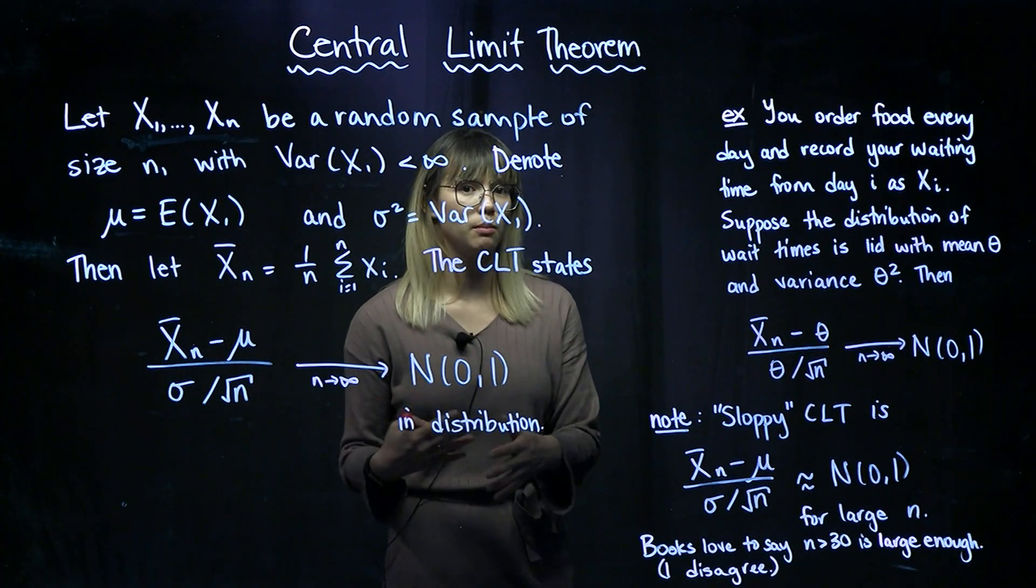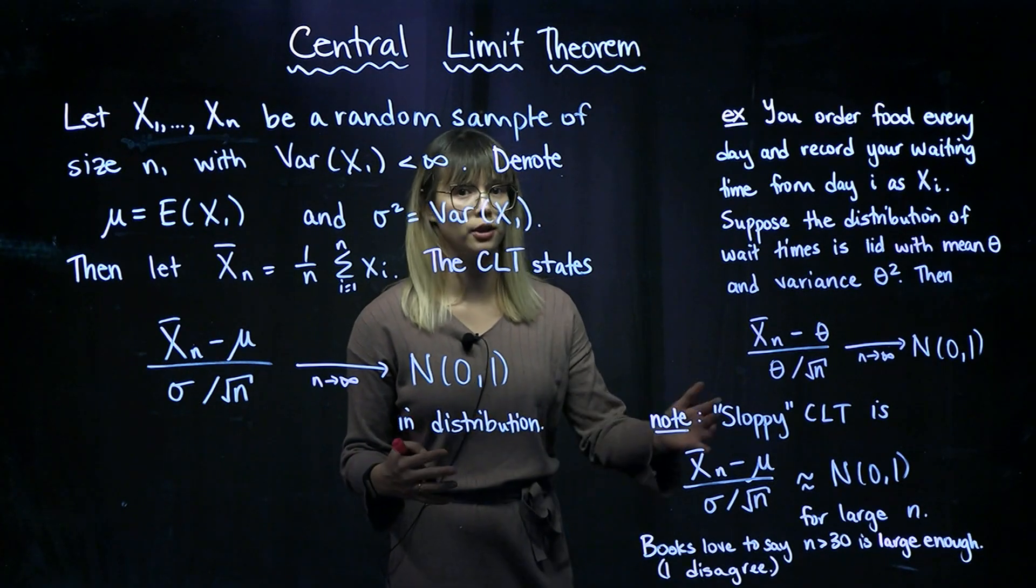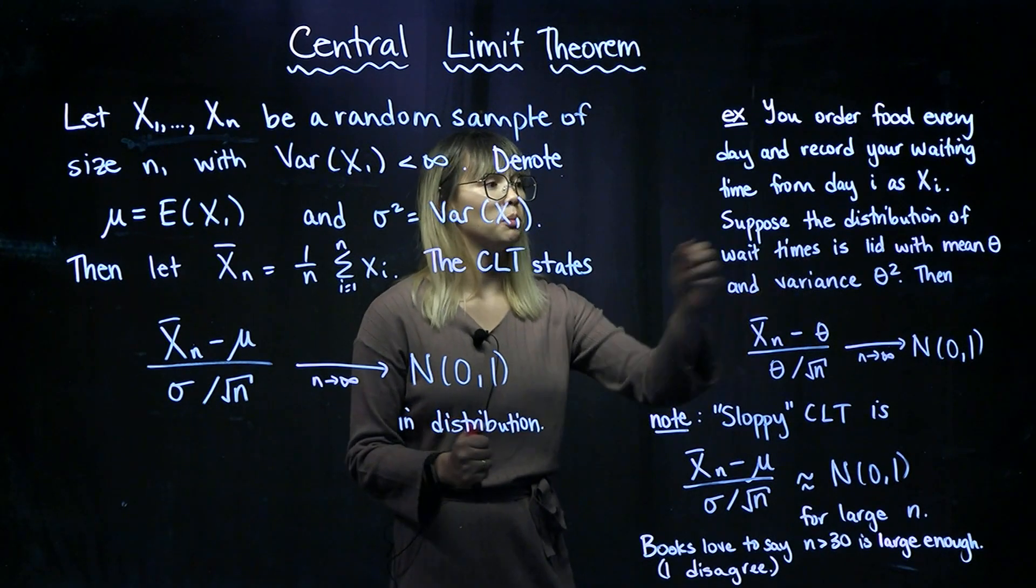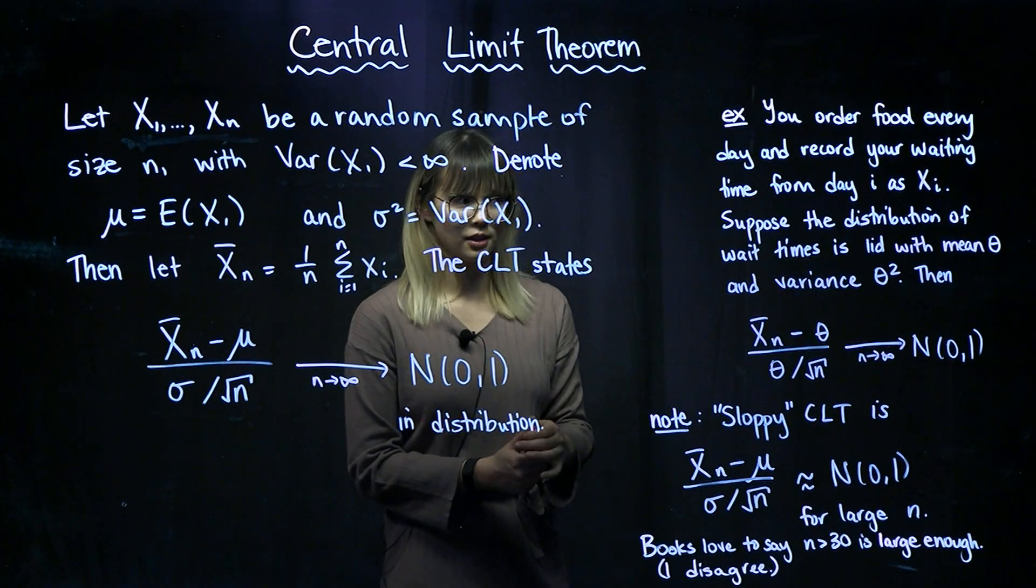as time passes, the wait time does not change on average, the distribution of the wait times does not change as time passes. So it's iid with mean theta and variance theta squared.